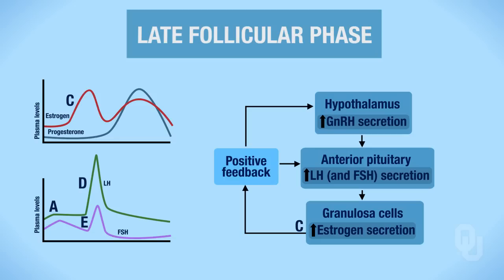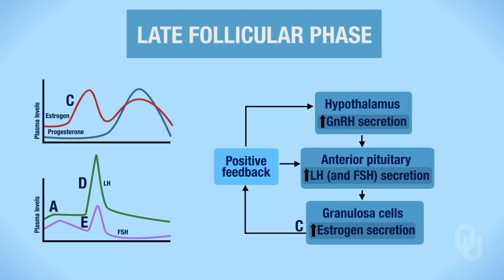These surges—the proper term is surges—are going to trigger ovulation. If this is triggering ovulation, this must be happening within a Graafian follicle, because Graafian follicles are the ones that rupture causing ovulation. Now there are some really important functions for this LH surge, which we're going to write out.